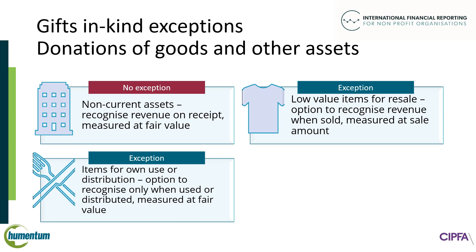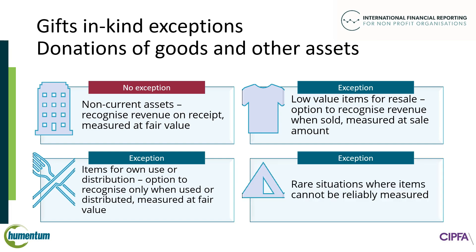The next permitted exception relates to items that have been donated for the NPO's own use or for onward distribution. Revenue recognition can be delayed until the items are used or distributed. This avoids the NPO having to recognize revenue for items it can't use or distribute, which is particularly relevant for perishable items close to expiry. In rare circumstances, an NPO might be unable to reliably measure the value of the donated items — for example, a small NPO responding to an emergency that lacks the resources to keep records for large volumes of donated items which are distributed almost immediately. In such cases, where measurement is not practically possible, the NPO should not recognize revenue, but should make disclosures instead.